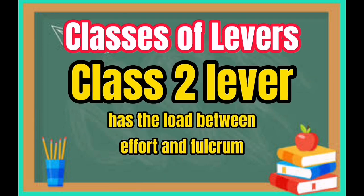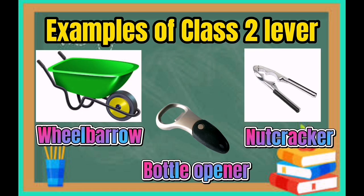Class 2 lever has the load between the effort and the fulcrum. Examples of class 2 levers are a barrel, nutcracker, and bottle opener.